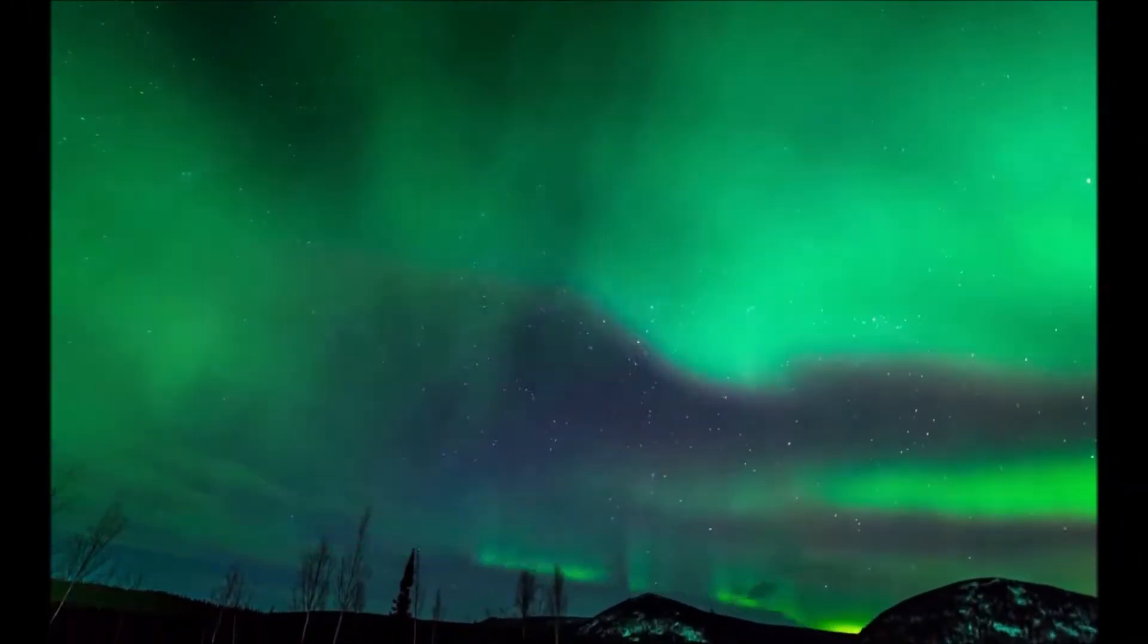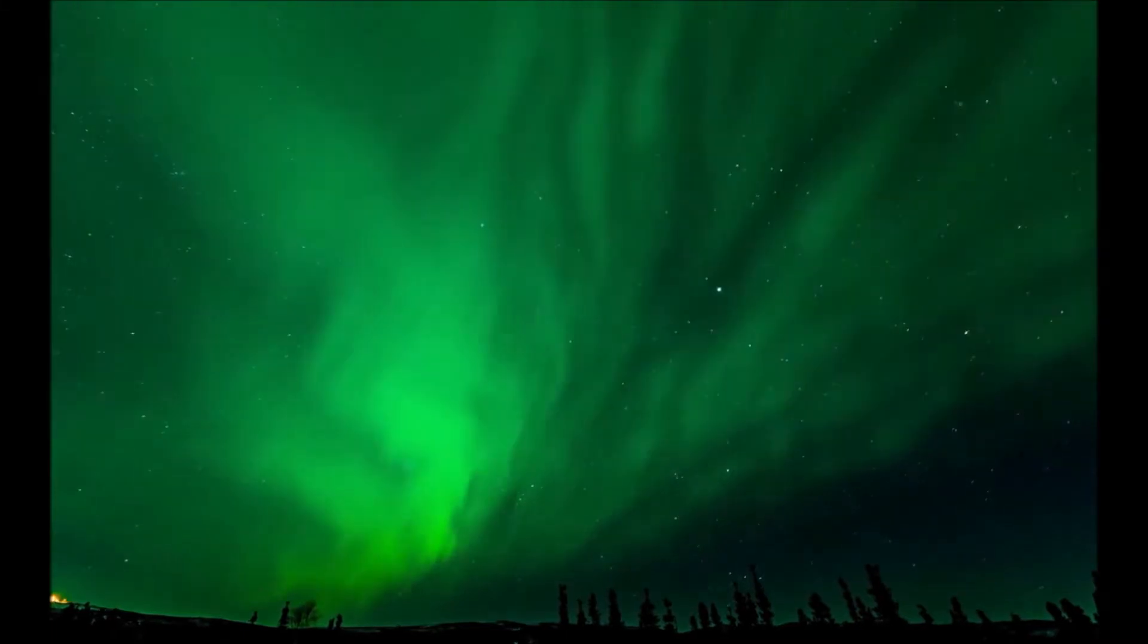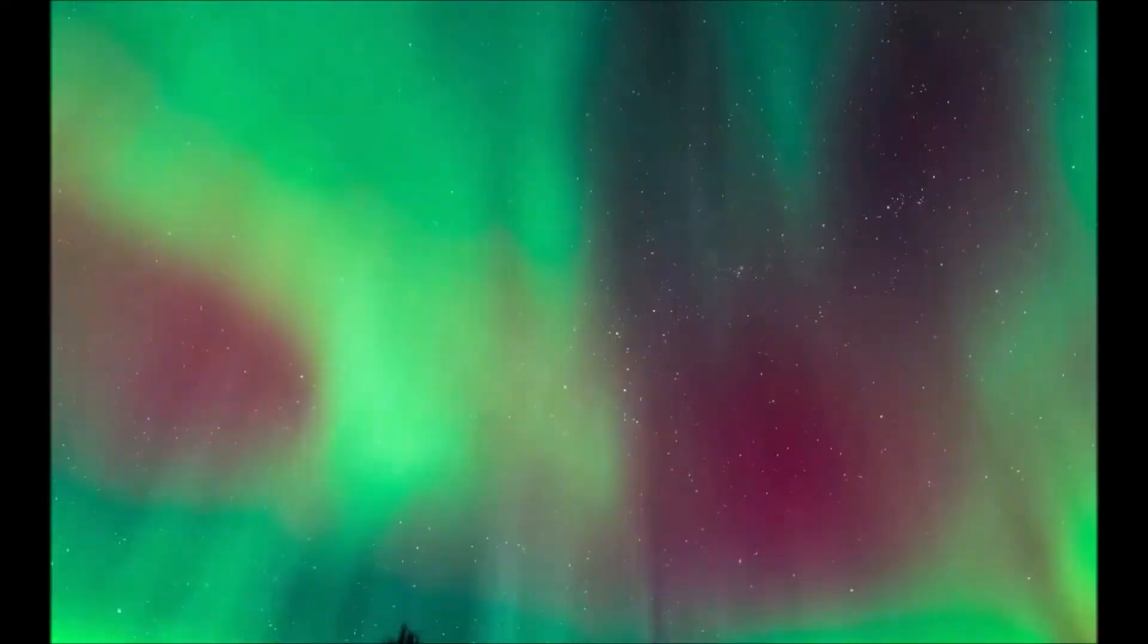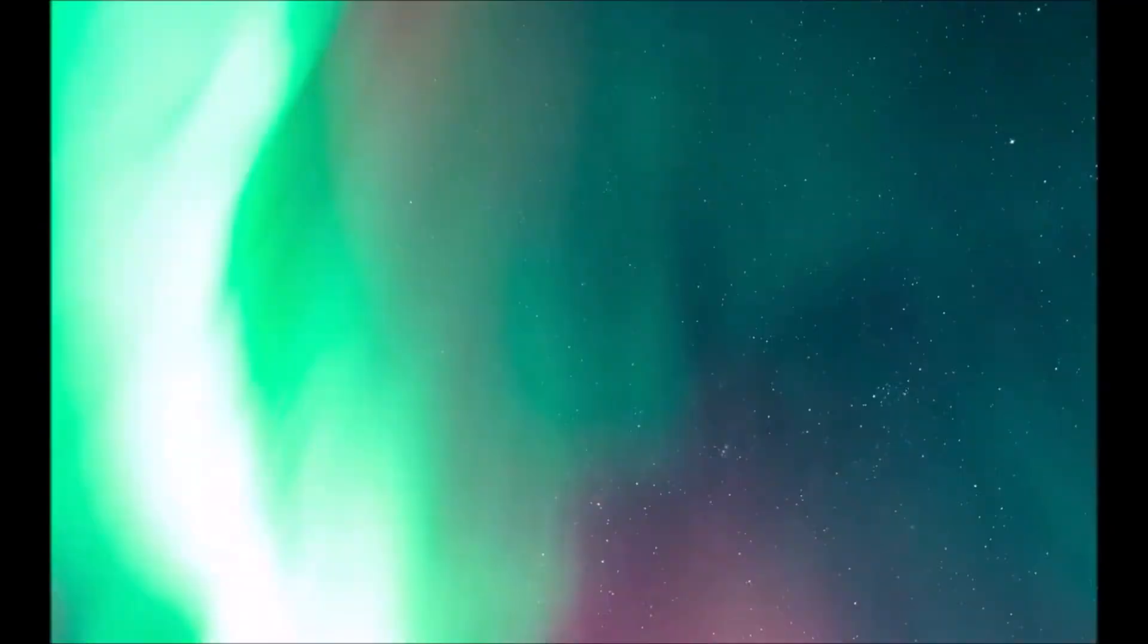Luminous aurorae appear in the polar night skies when Earth's magnetic field traps charged particles carried from the Sun by the solar wind. Atmospheric gas particles produce a spectrum of colors.